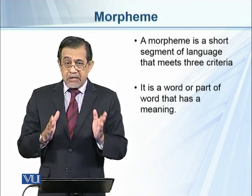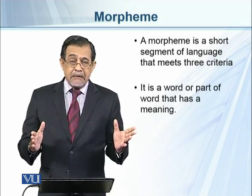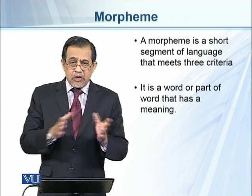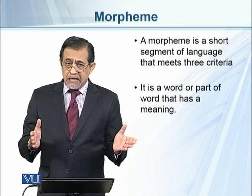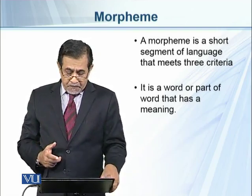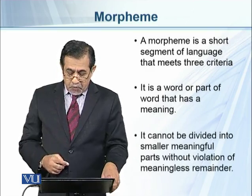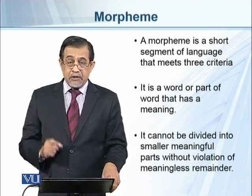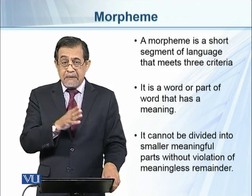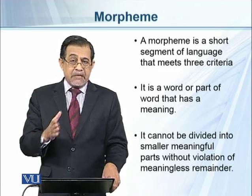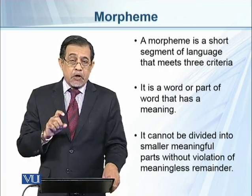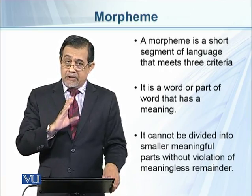Morphemes cannot be meaningless. If we take the word 'talk' and break it into 't,' 'a,' 'l,' and 'k,' those letters don't have any meaning, so they are not morphemes. The second criterion is that a morpheme cannot be divided into smaller meaningful parts without a meaningless remainder. If we were to break 'talk' into smaller parts, the remainder would be meaningless, so it cannot be called a morpheme.